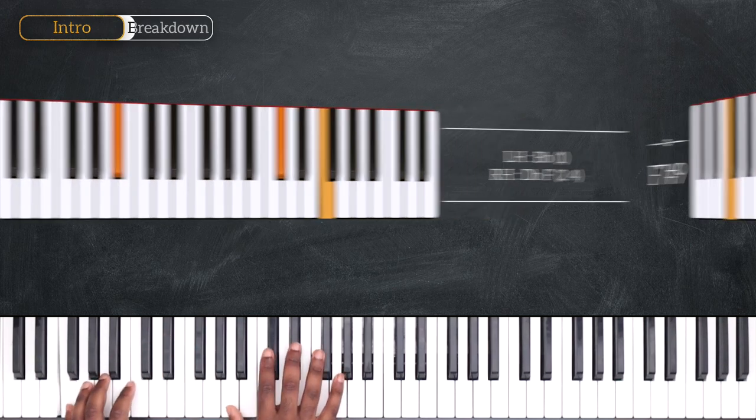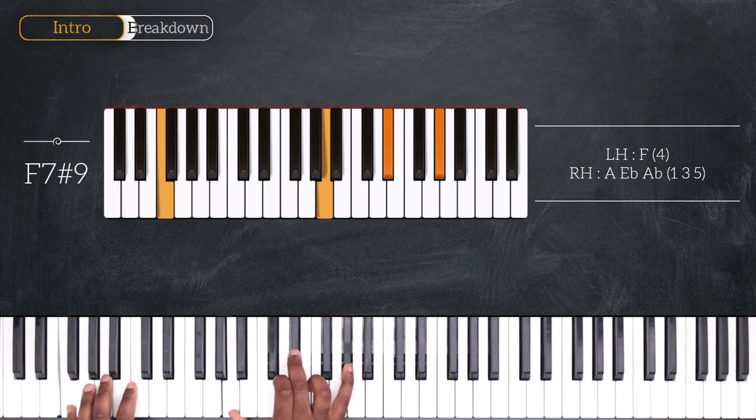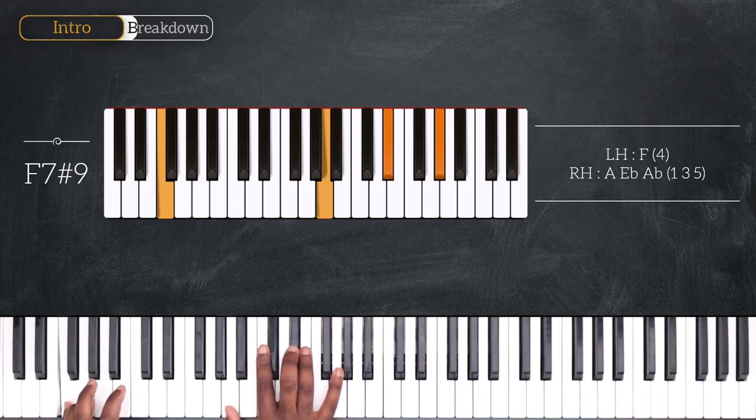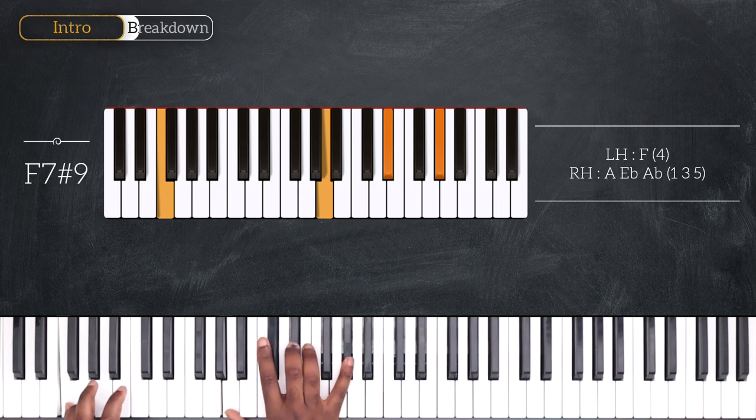Followed by this. I'm playing F7 sharp 9. F on the left, A, Eb and Ab on top. So, the third, the seventh and then the sharp 9.